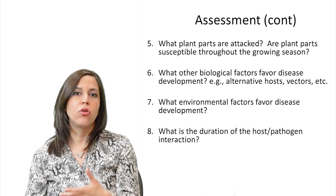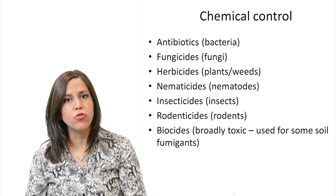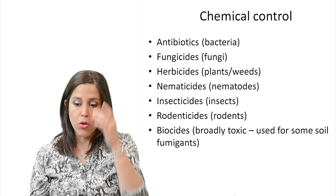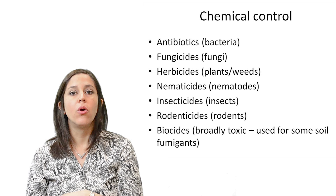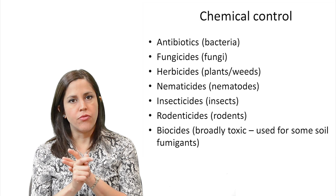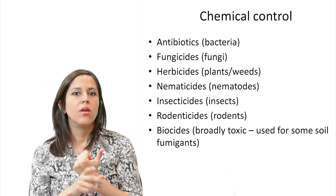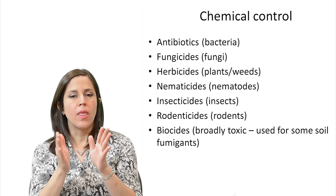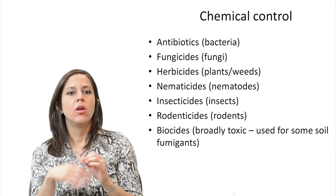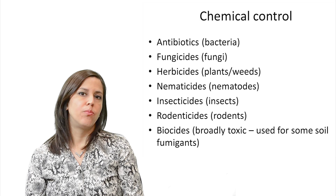For chemical control, we have a list of chemicals targeting specific pathogens: antibiotics target bacteria; fungicides target fungi; herbicides target weeds; nematicides target nematodes; insecticides target insect vectors; rodenticides target rodents; and biocides are broadly toxic, used as soil fumigants — they kill everything, good and bad.